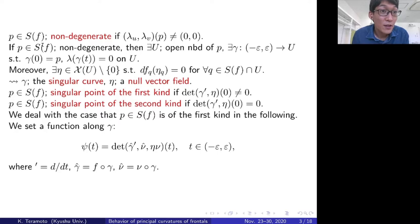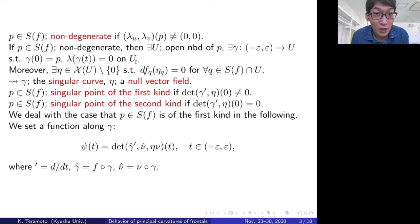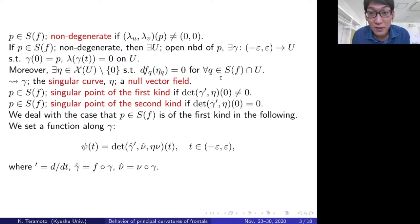We take a singular point P. Then P is said to be non-degenerate if the gradient vector of λ at P is not the zero vector. So, if P is a non-degenerate singular point, then there exists an open neighborhood of P and a regular curve γ passing through P, such that λ vanishes along γ. Moreover, since a non-degenerate singular point is a corank-1 singular point, there exists a non-zero vector field η on U such that df(η) vanishes for any singular point q. We call γ and η the singular curve and the null vector field.